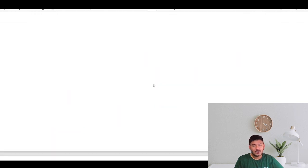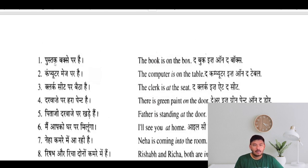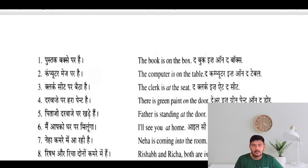This is all about the preposition. पुस्तक बक्से पर है — the book is on the box. Computer मेज पर है — the computer is on the table. Color seat पर बैठा है — the colored kid at the seat. There is green paint on the door. पिताजी दरवाजे पर खड़े हैं — father is standing at the door. I will see you at home — मैं आपको घर पर मिलूँगा।